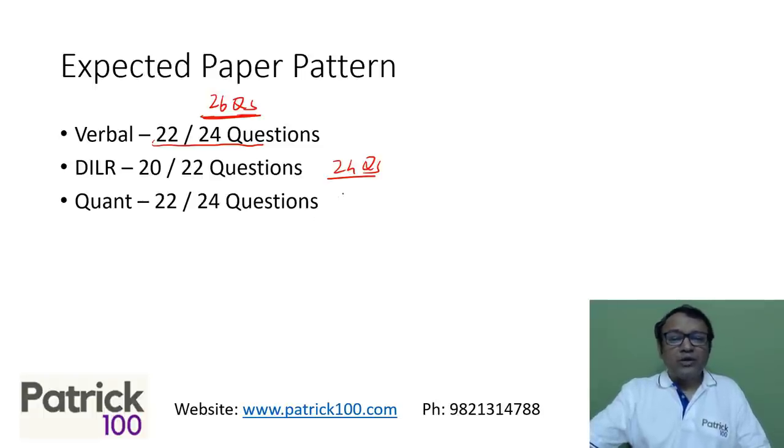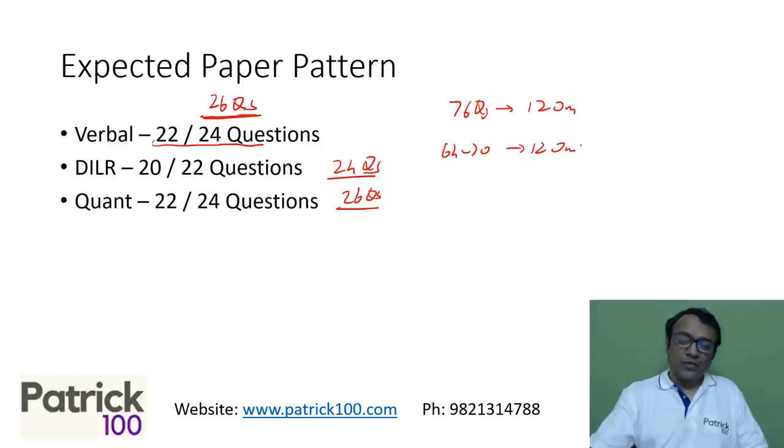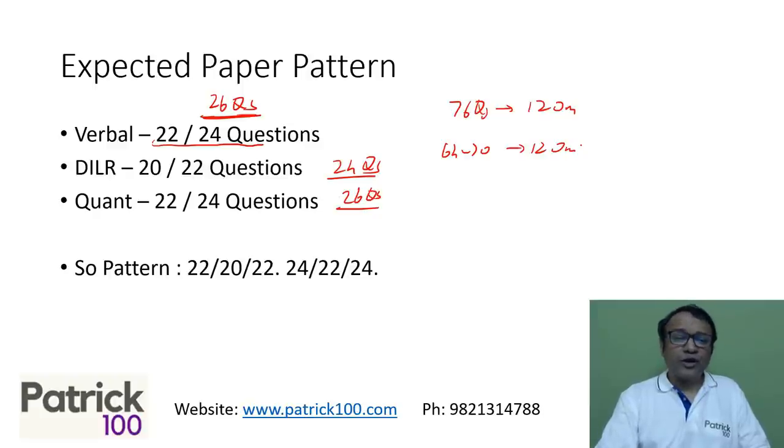Same way, 26 questions will become 22 to 24 questions. So there will be a reduction of around two to four questions per section. So initially you had 76 questions to be solved in 120 minutes, which could reduce as I said to 64 to 70 questions in 120 minutes. Let's try to probe further and figure it out.